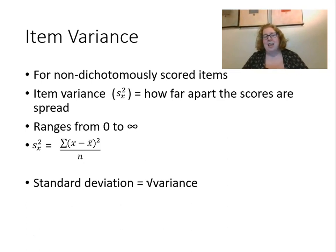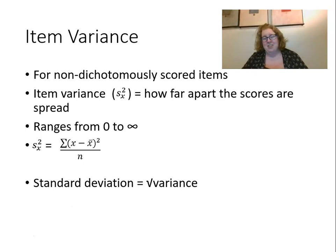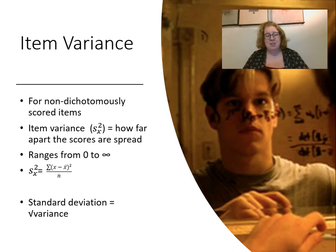Item variance is essentially the same thing as standard deviation, but when talking about individual items, psychometricians talk about variance rather than standard deviation. It's calculated pretty much the same way. I'm not going to go over the whole formula — know that you can calculate variance using a formula in Excel, and at the end of this lecture I'll show you an example of how to do this.